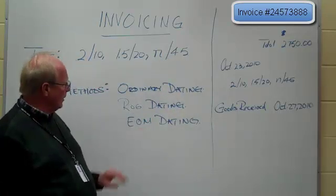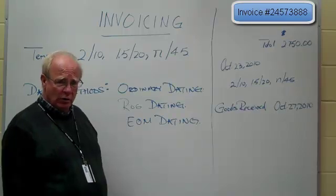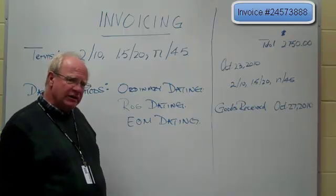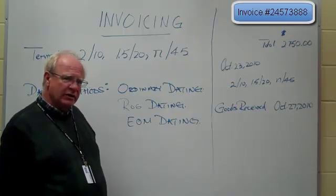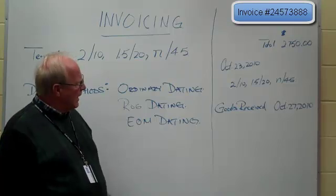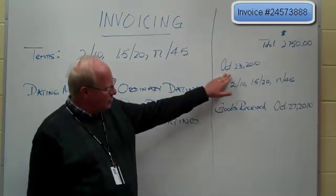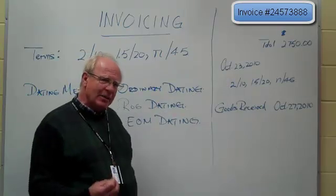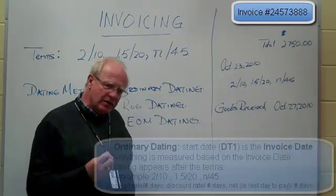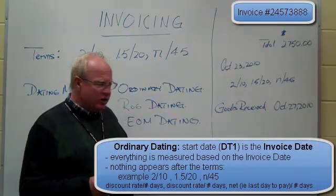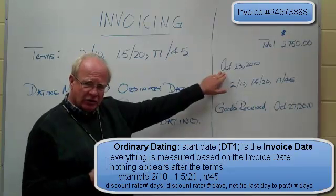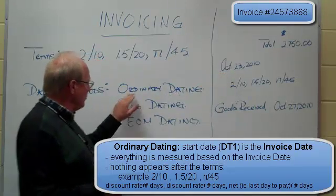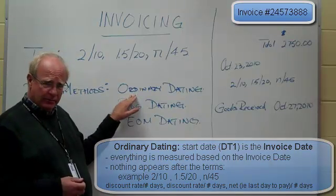It'll just end with NET 45, or whatever the term is, and nothing else is written there — that indicates ordinary dating. With ordinary dating, the only date that's important is the date on the invoice, which in this case is October the 23rd, 2010. So that becomes date one that you enter into the calculator.